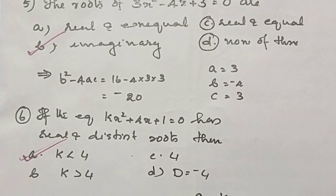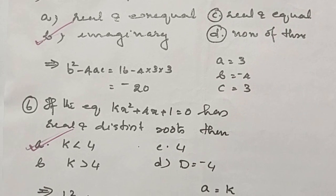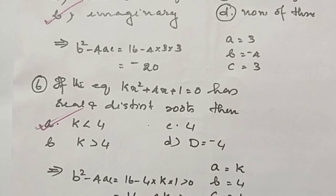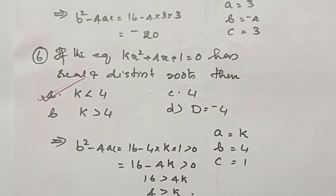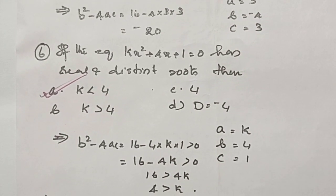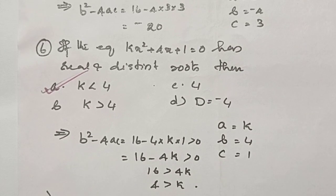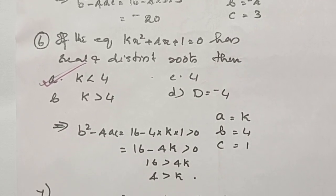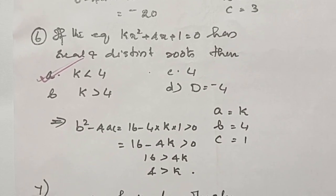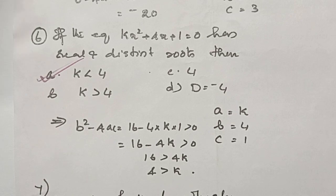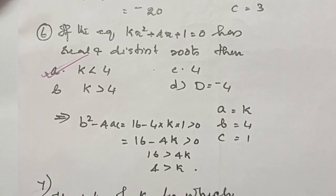If kx squared plus 4x plus 1 equals 0 has real and distinct roots, then we have to find the value of k. Finding the value of k: substitute the values in b squared minus 4ac. Then we will get k is less than 4.